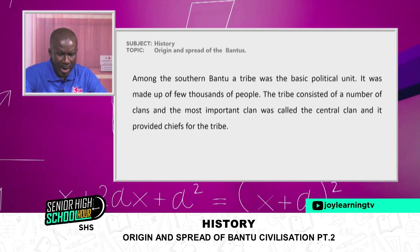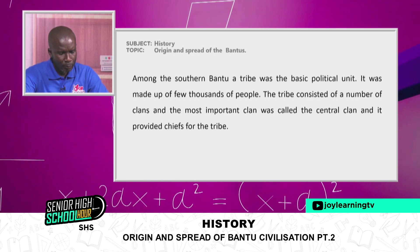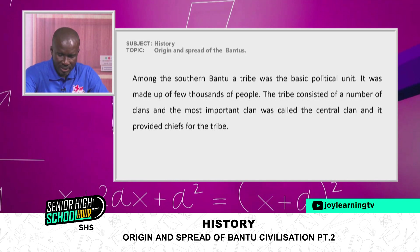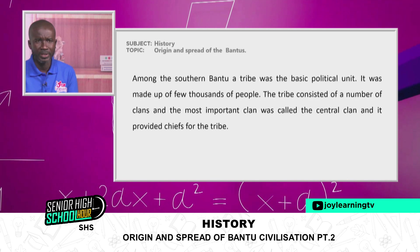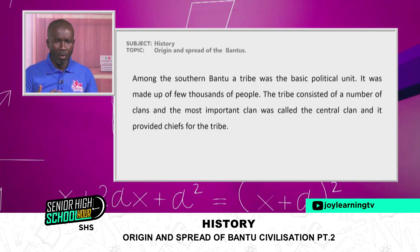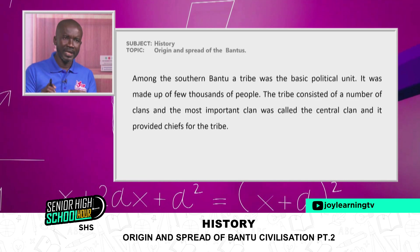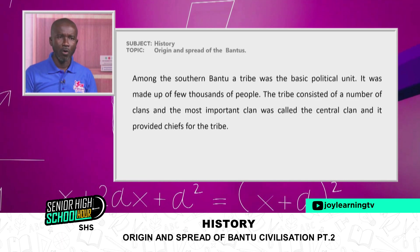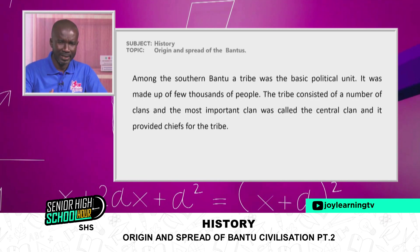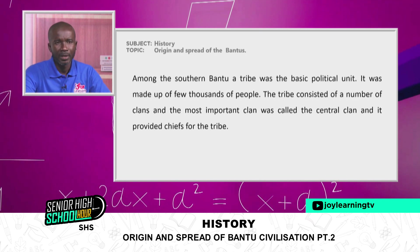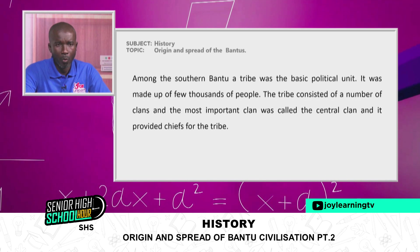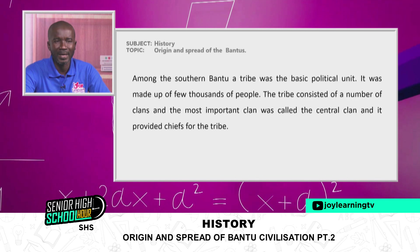Among the southern Bantu, a tribe was the basic political unit, made up of a few thousands of people. The tribe consisted of a number of clans, and the most important clan was called the Central Clan, which provided chiefs for the tribe. We can relate to this even in West Africa and Ghana — there are particular clans from which chiefs and kings come. The Oyoko clan is one such central clan.